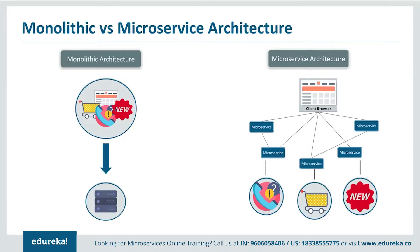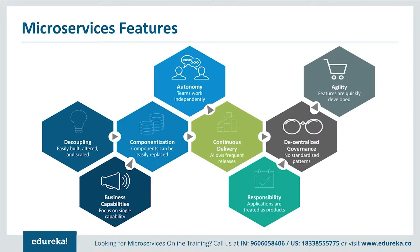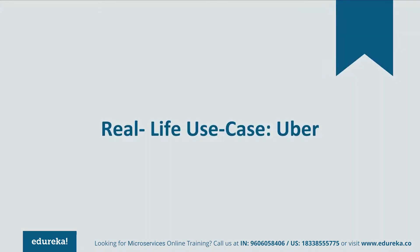Let's summarize the difference between both architectures. Monolithic architecture had a single framework for all features on a single database, whereas microservice architecture has different microservices for each feature, each handling their own database. The features that made developers shift to microservices include: applications were easily built, altered, and scaled; they focused on a single capability; all components could be easily replaced; teams worked independently; frequent software releases were allowed; applications were treated as products; there were no standardized patterns; and all features were quickly developed. Let's now look at the real-life use case of Uber.